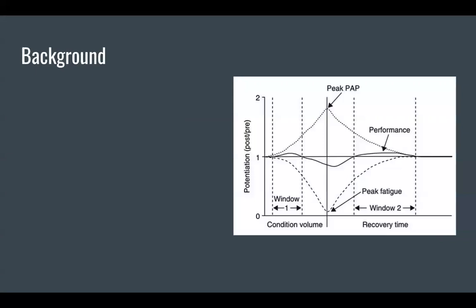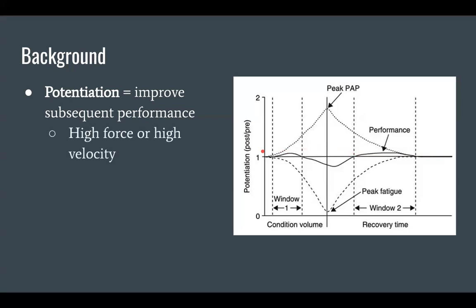Beginning with the background of potentiation, I want you to look at the image on the right. When we use a conditioning contraction, we increase the potentiation within the muscle, but we also induce fatigue. Potentiation ultimately is using this conditioning contraction to enhance subsequent muscle performance. So as fatigue decreases, the potentiation response also decreases, but we see this increase in performance right here.